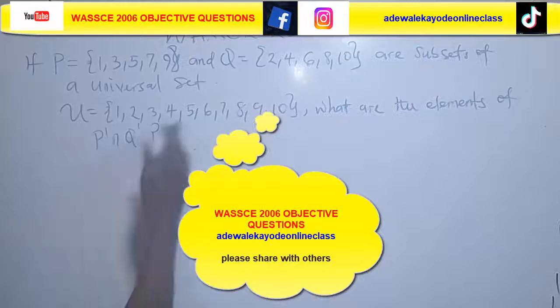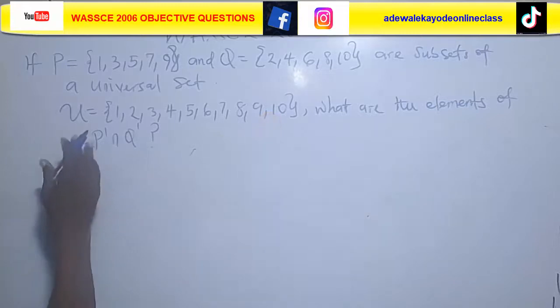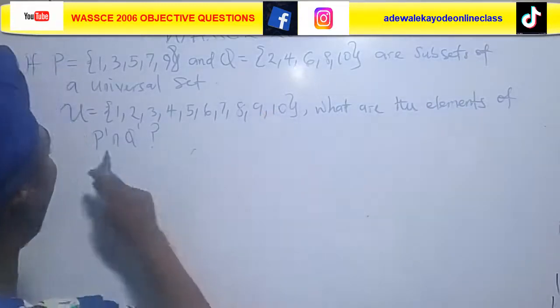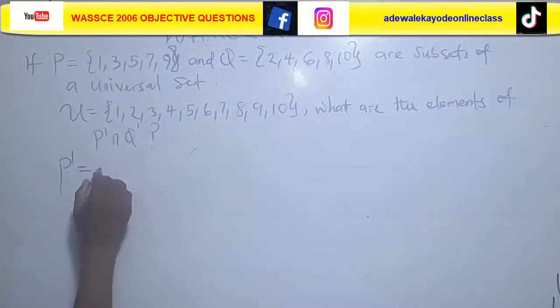Let's see this question, WASSCE 2006. The question I want to solve this within one minute, so let's go. We are asked to find what are the elements of P complement intersect Q complement.